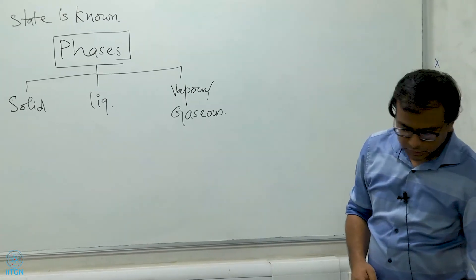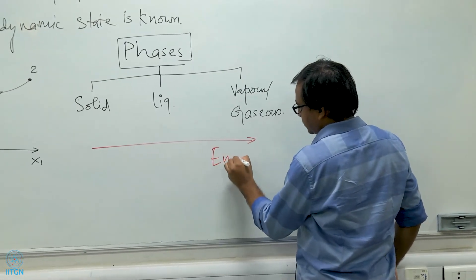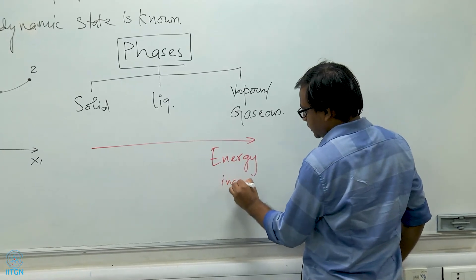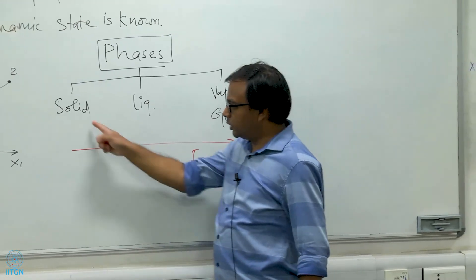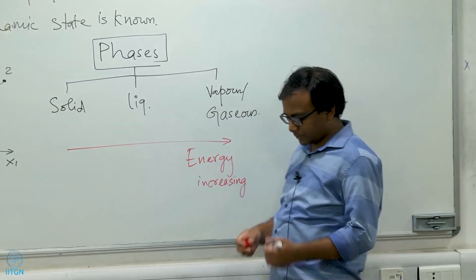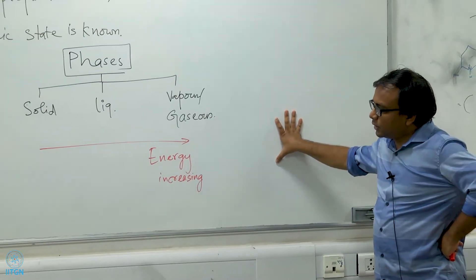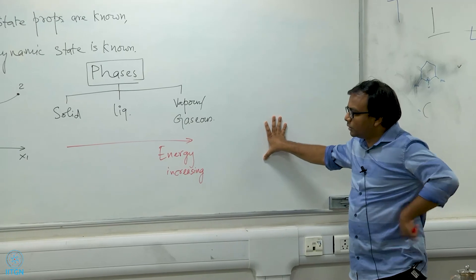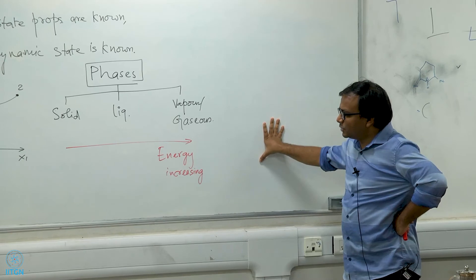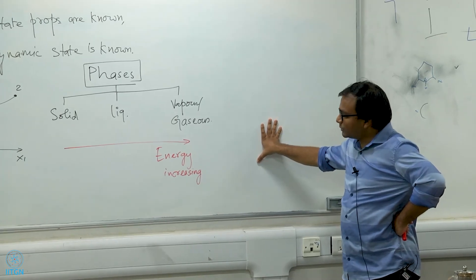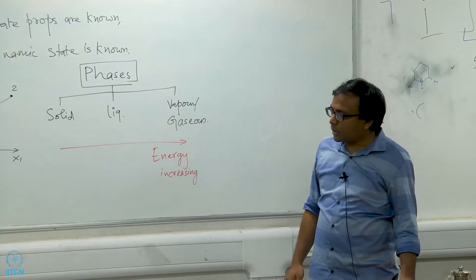If I draw an energy scale, energy increases from solid to liquid to vapor. This is the same reason why you need to supply energy to convert a liquid to vapor or a solid to liquid. Substances can also exist in other states such as plasma, but we will not discuss those for the time being.